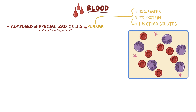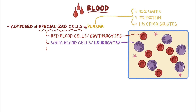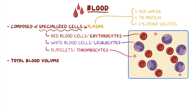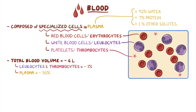Three main types of blood cells are the red blood cells or erythrocytes, white blood cells or leukocytes, and platelets, which are also called thrombocytes. The total blood volume of an average adult is about 6 liters. Leukocytes and thrombocytes only comprise about 1% of the blood volume, whereas plasma, which is the largest portion of the blood, is about 55%.